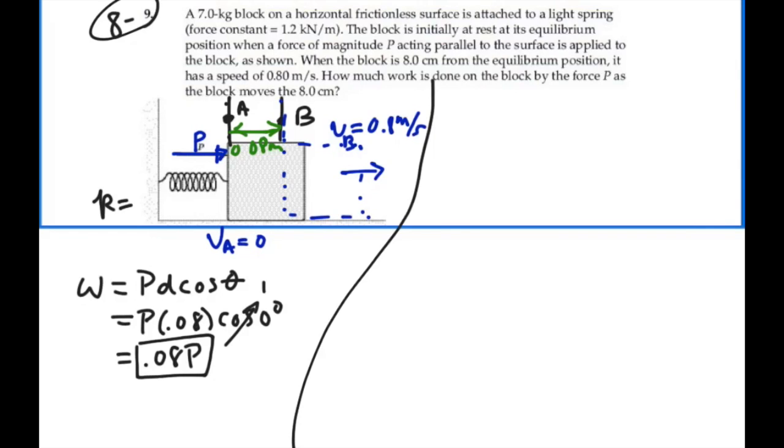We know that the K constant is 1.2 kilonewtons per meter. So that's 1,200 newtons per meter. And let's apply the one equation to rule them all. So the kinetic energy at A plus potential energy at A plus any work done along the way should equal the kinetic energy at B plus the potential energy at B. So the question is, which if any of these terms might actually be 0? We started from rest. So our velocity at A is 0 and our kinetic energy at A is 0.